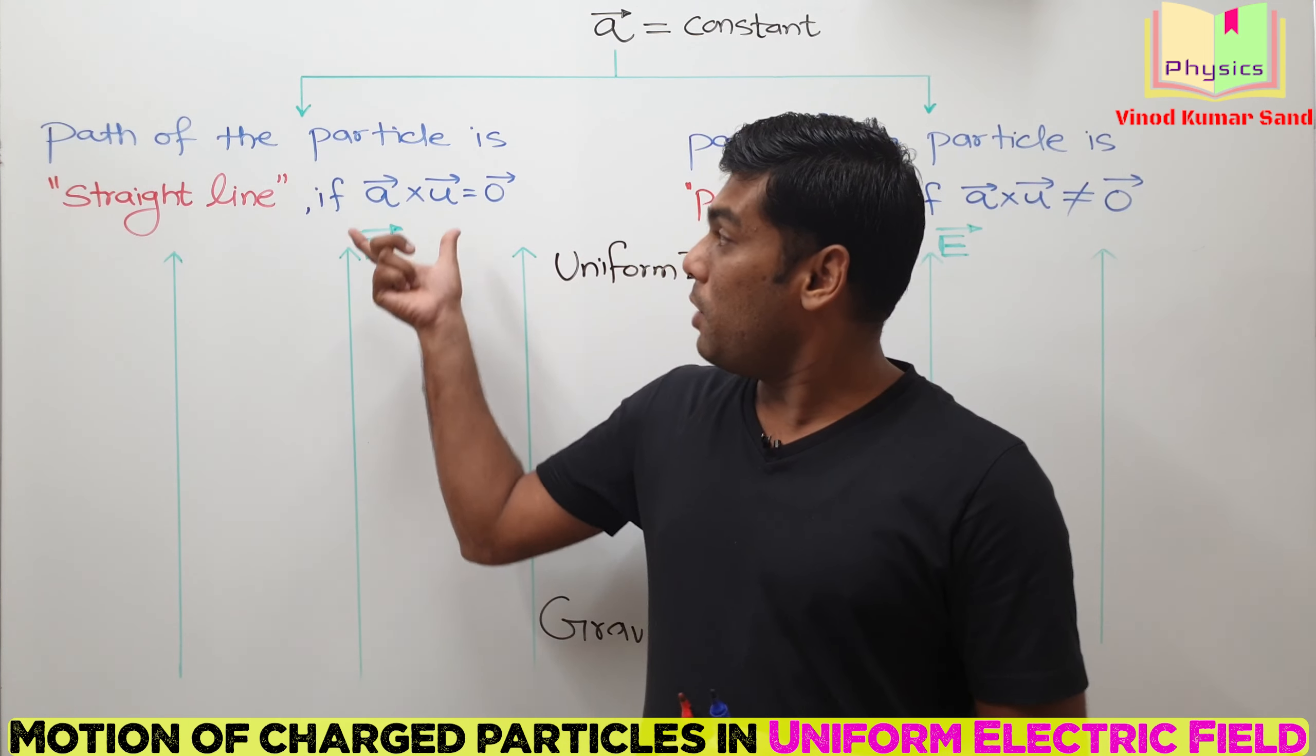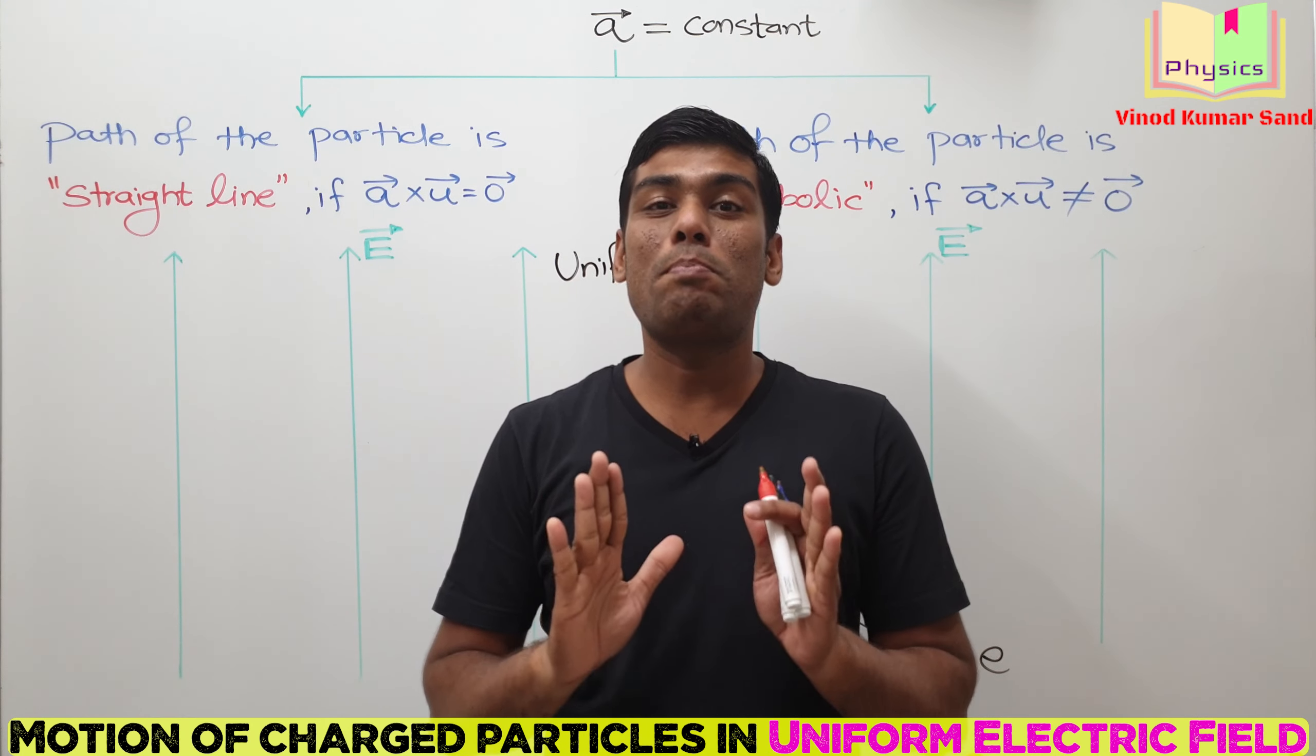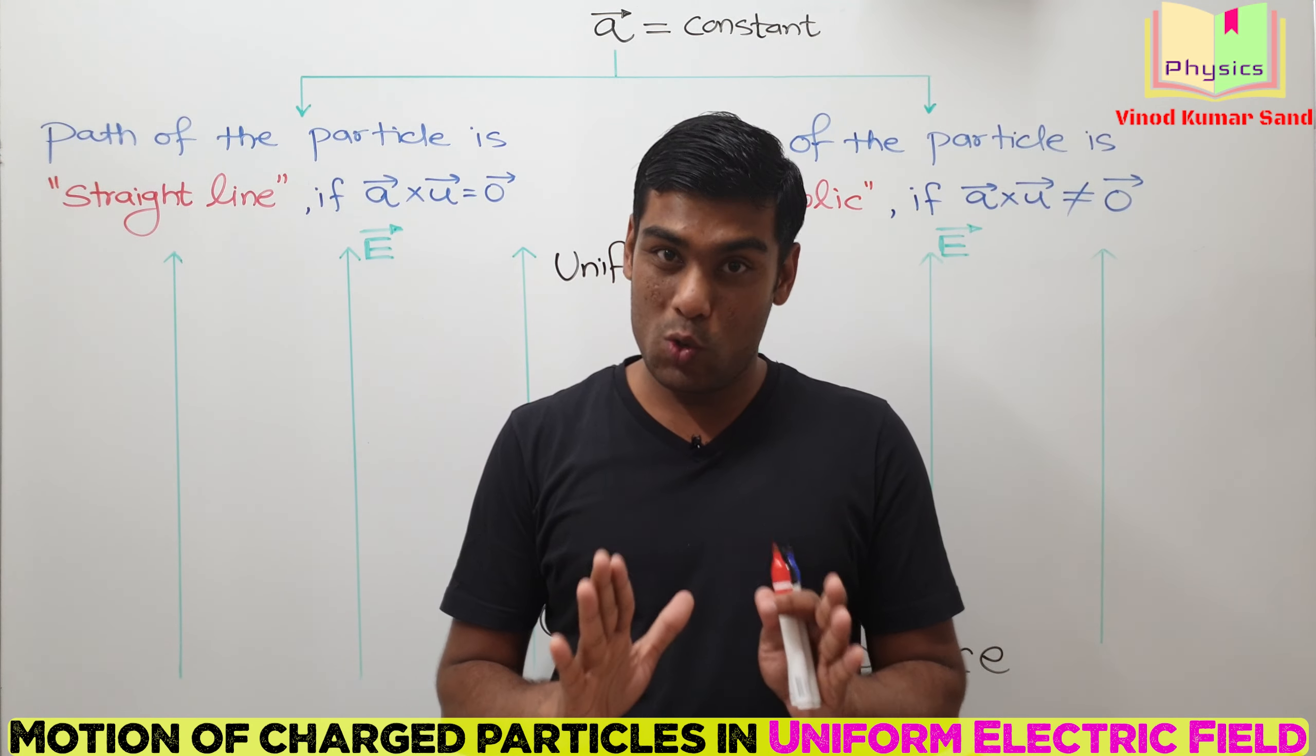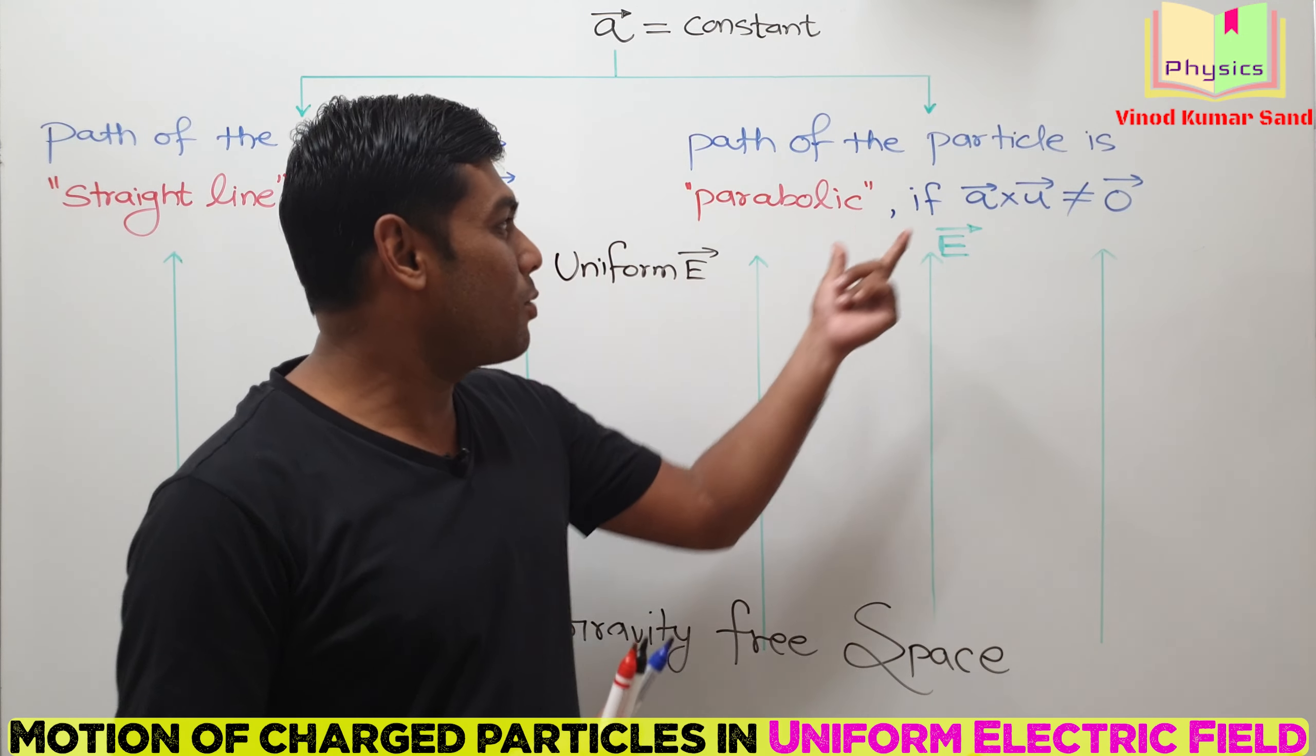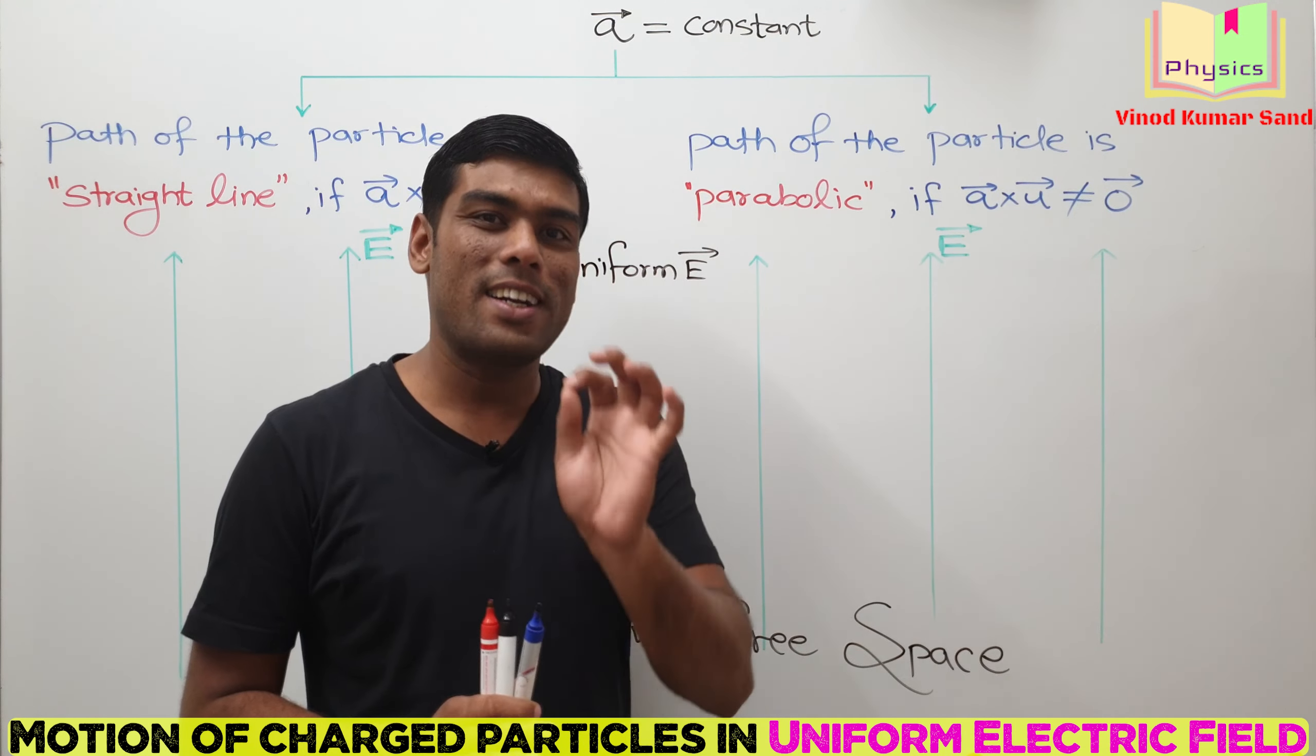If A vector cross U vector equals null vector, then the path of the particle will be straight line. Whereas if A vector cross U vector is not equal to zero vector, then the path of the particle will be parabolic.